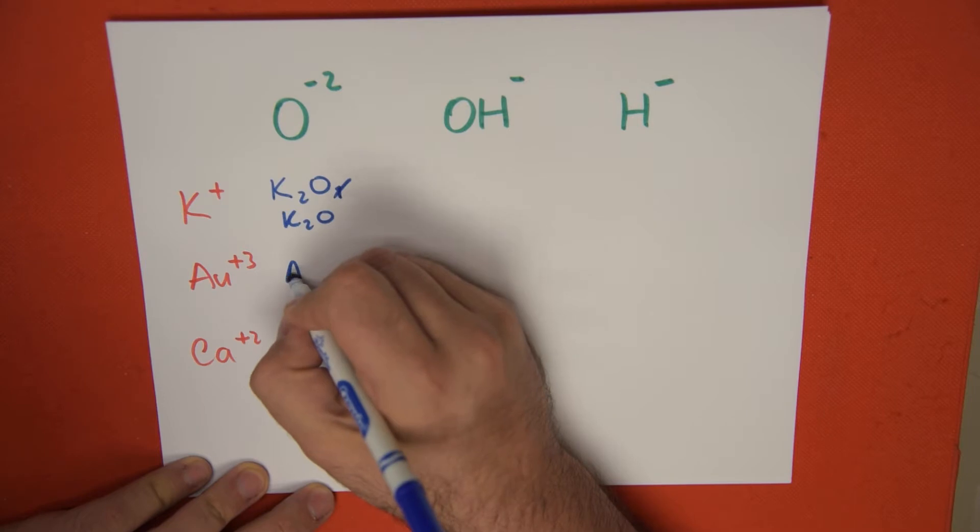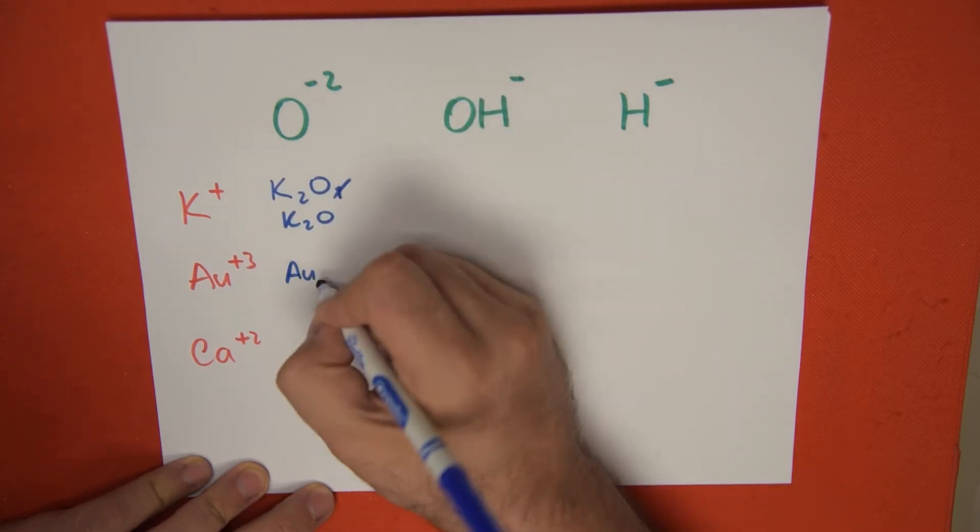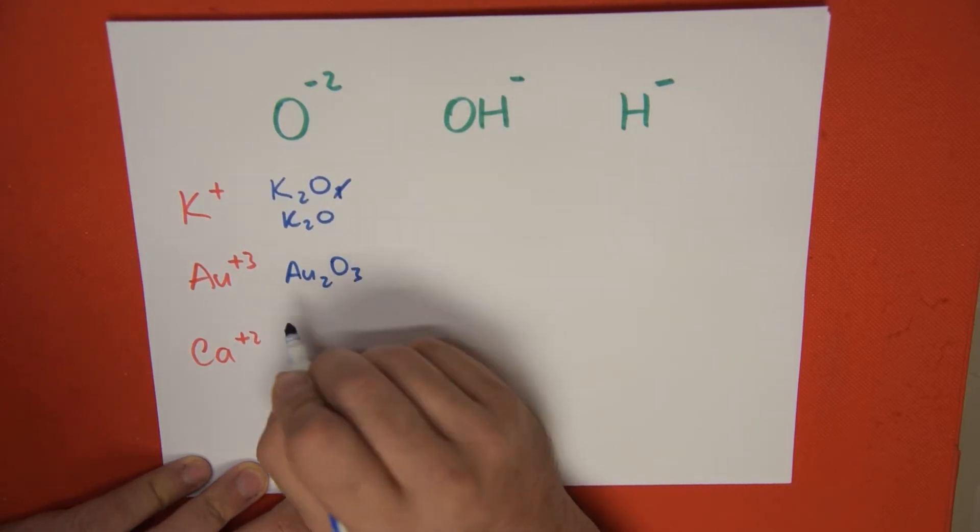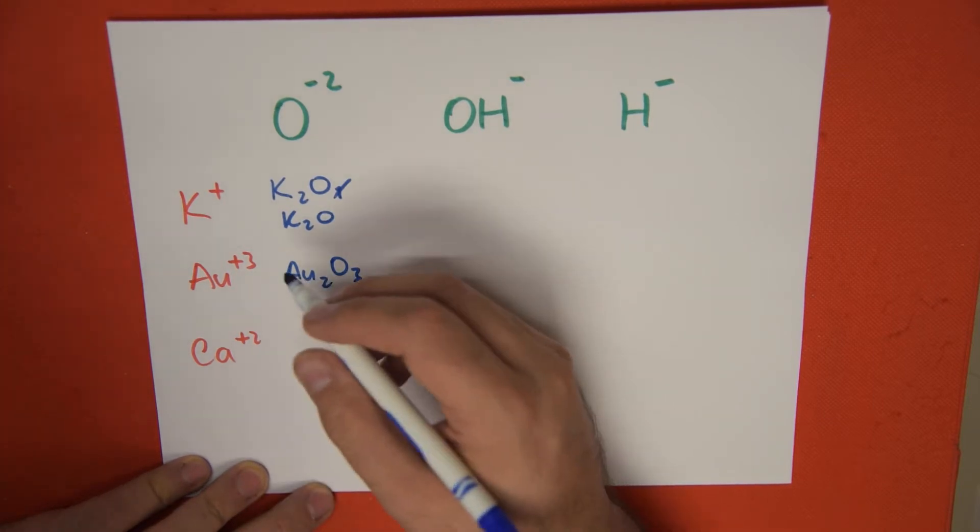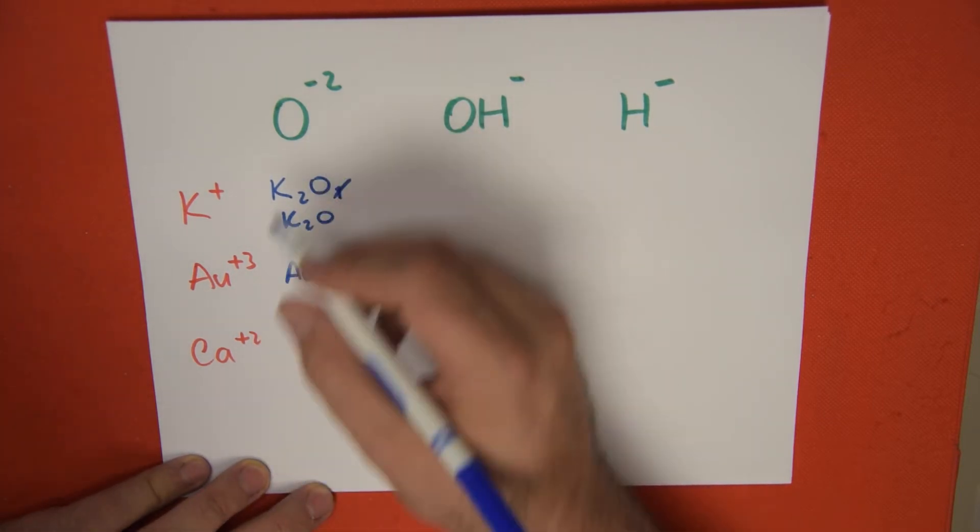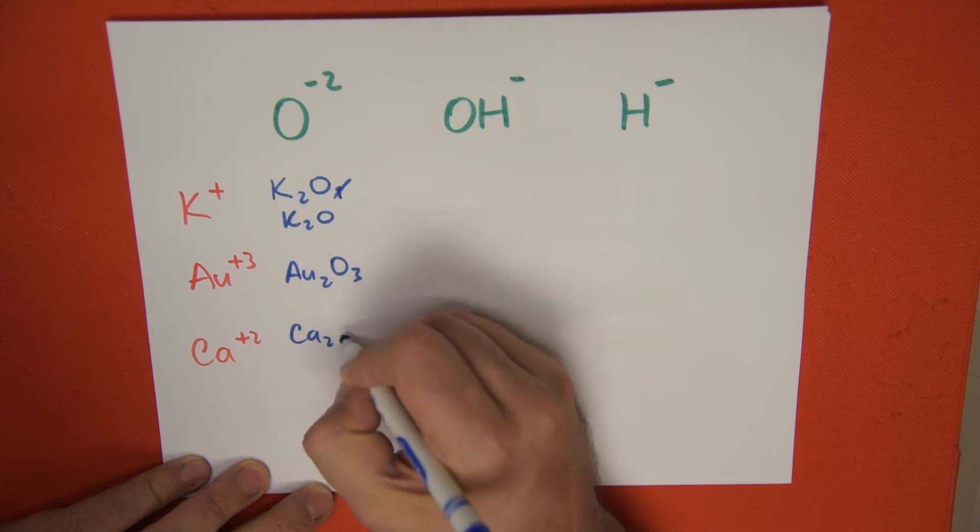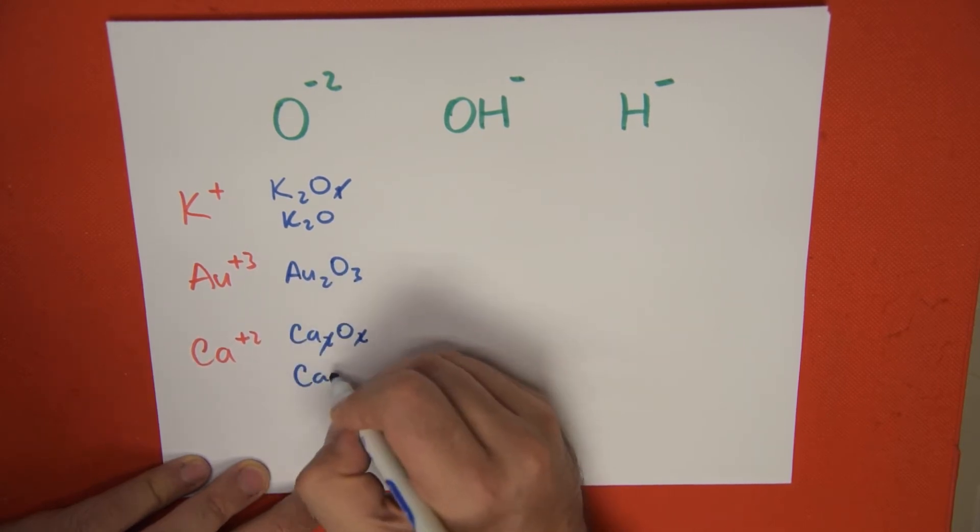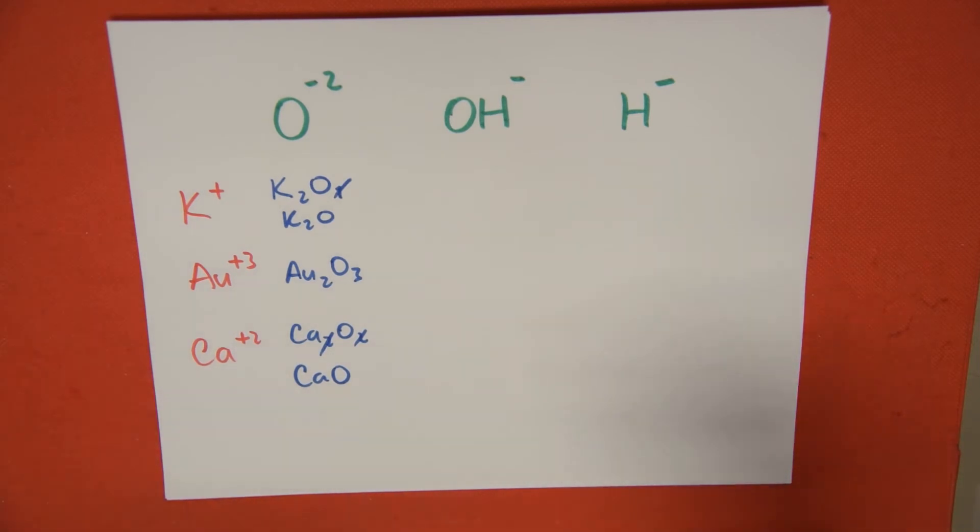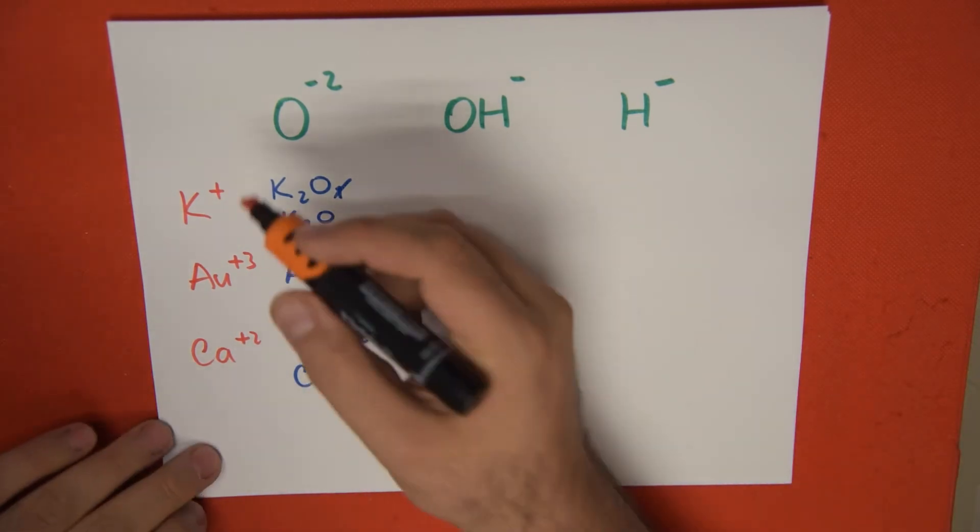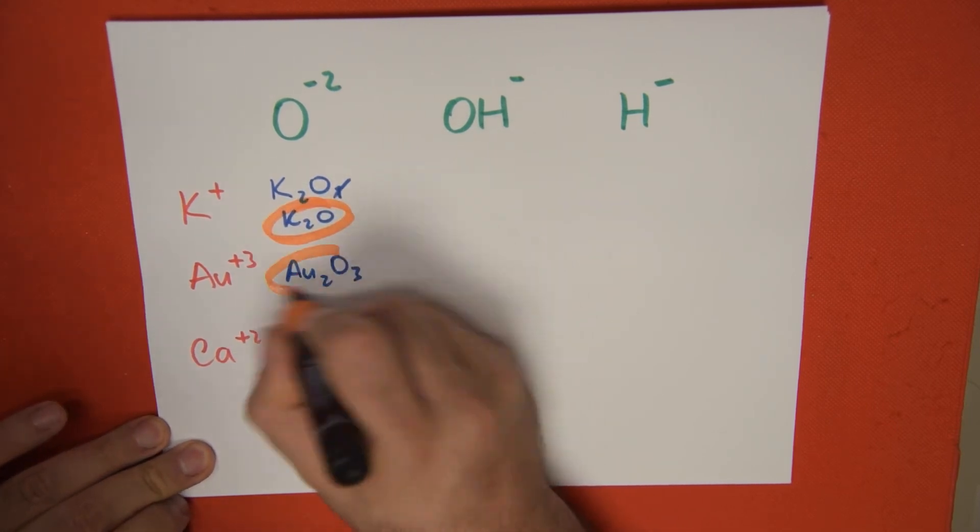Same thing. Au, we take the two from here from the criss-cross. O3, this would be gold-three oxide. I will explain this further on in a naming video. And finally, when we exchange, calcium has two, oxygen has two. And when we reduce this, we get CaO, get that electroneutrality. I'm going to circle these so that it's easier to identify our final formula.